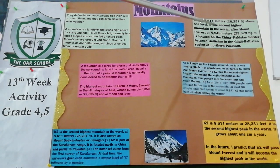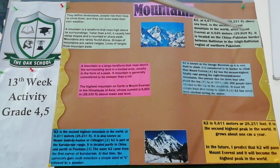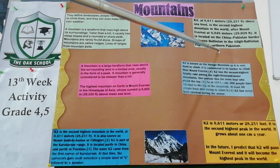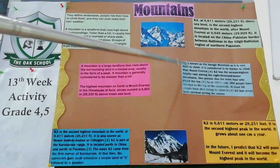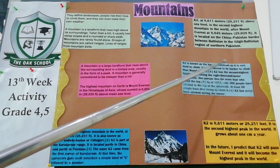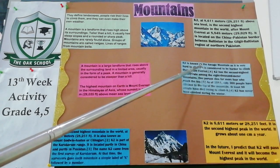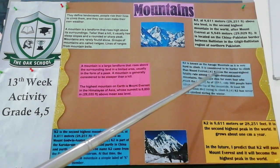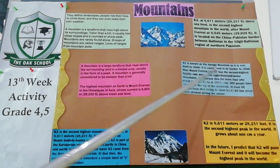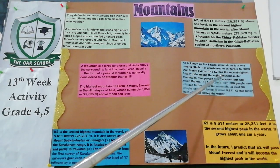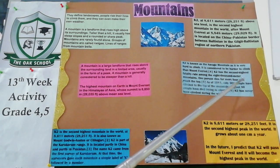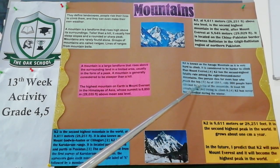K2 is also located on the China-Pakistan border, between the Gilgit region of Northern Pakistan. K2's elevation is less than Mount Everest. K2 is known as the savage mountain as it is very hard to climb. It is considered to be harder to climb than Mount Everest. K2 has the second highest fatality rate among the 8,000-meter mountains.